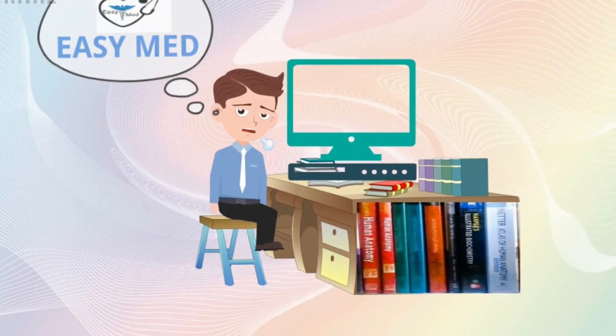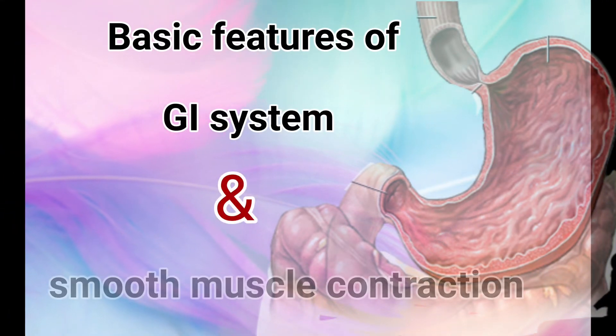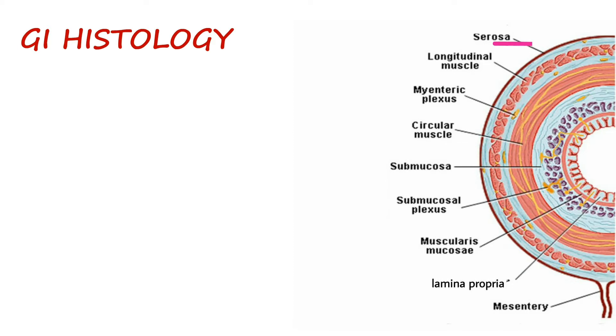Everyone, welcome to Easy Med. In this video we'll be learning about some basic features in our gastrointestinal system and the process of smooth muscle contraction. Almost every organ of our GI system has basically four layers: namely outer serosa, muscularis externa with outer longitudinal and inner circular muscle,